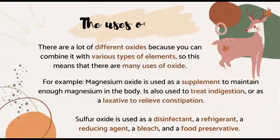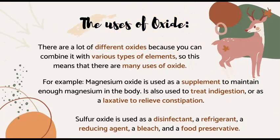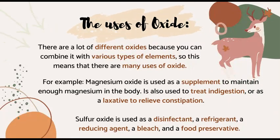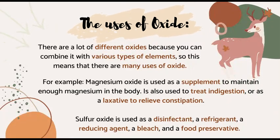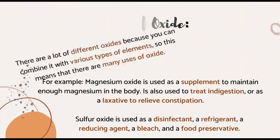The uses of oxides. There are a lot of different oxides because you can combine it with various types of elements, so this means that there are many uses of oxides. For example, magnesium oxide is used as a supplement to maintain enough magnesium in the body. It is also used to treat indigestion or as a laxative to relieve constipation. Sulfur oxide is used as a disinfectant, a refrigerant, a reducing agent, a type of bleach, and a fruit preservative.